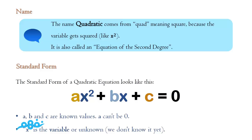And it becomes a linear equation. Here, x is the variable — x is the mystery that we try to solve by solving the quadratic function.